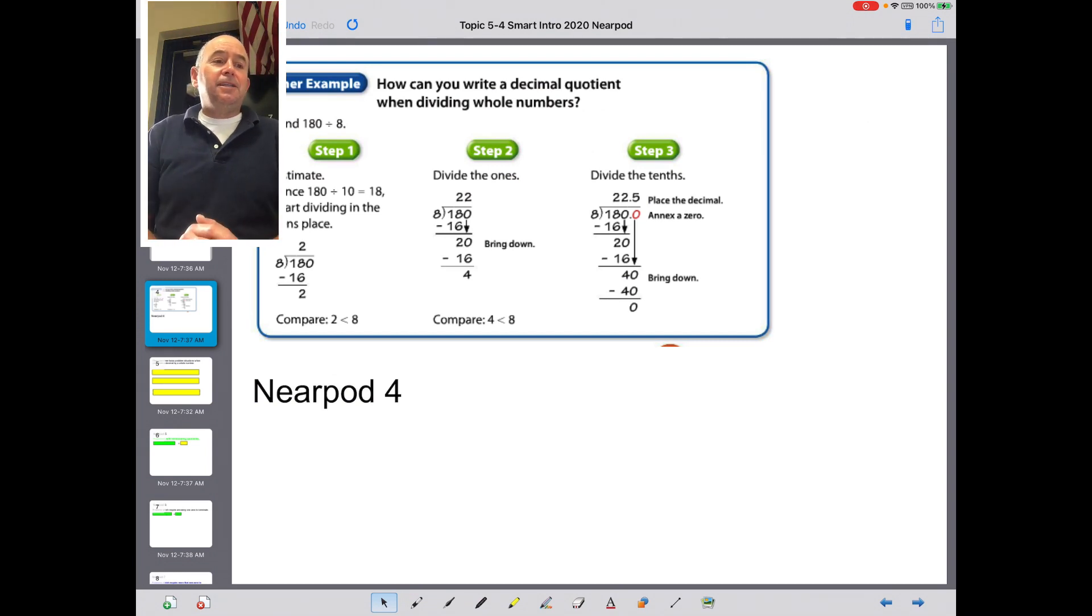So how can you write a decimal quotient when dividing a whole number? Well, when you look at the first example, they say 180 divided by 8. Step one is estimate. They estimate the answer. It looks like they're using the compatible numbers of 8 and 18, which is 2. That 2 is actually going to be the starting point for the actual division.